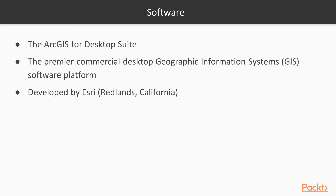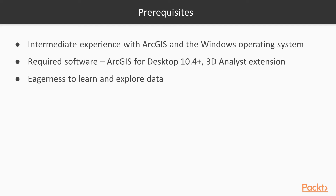The software we'll use is the ArcGIS for Desktop Suite — the premier commercial desktop geographic information system software platform, developed by Esri, based in Redlands, California. Prerequisites for this course include intermediate experience with ArcGIS and the Windows operating system. You'll need ArcGIS for Desktop 10.4 or higher, and the 3D Analyst extension.